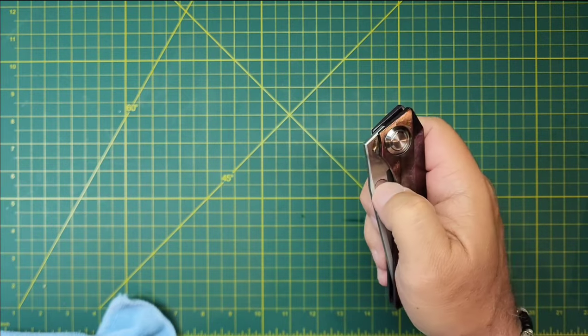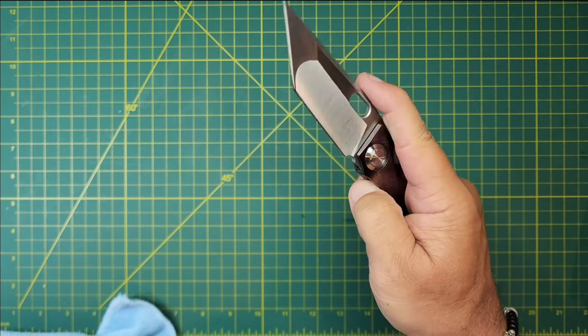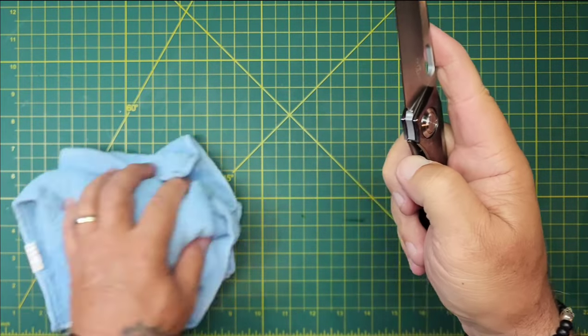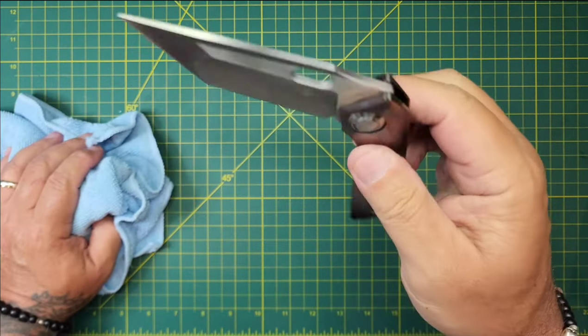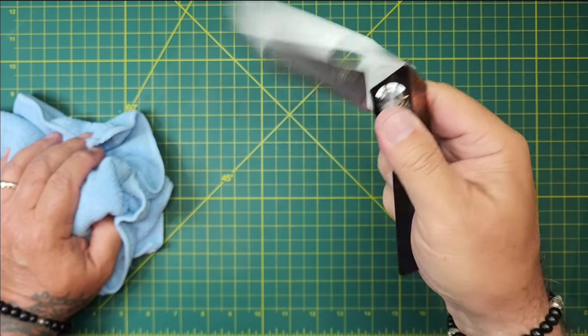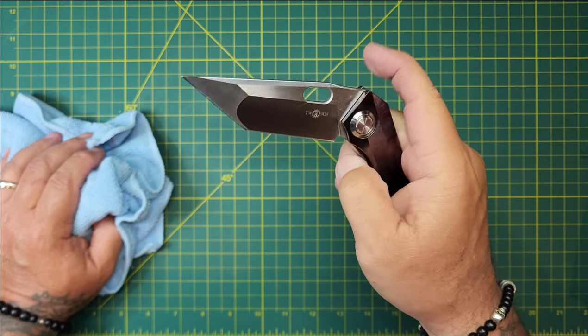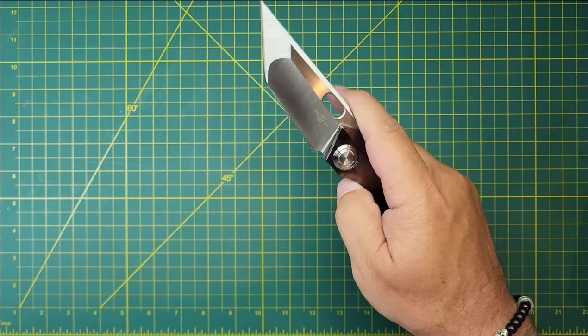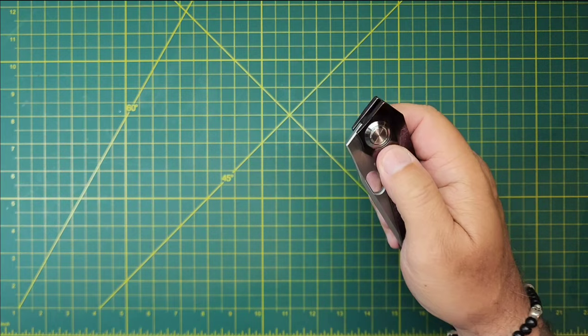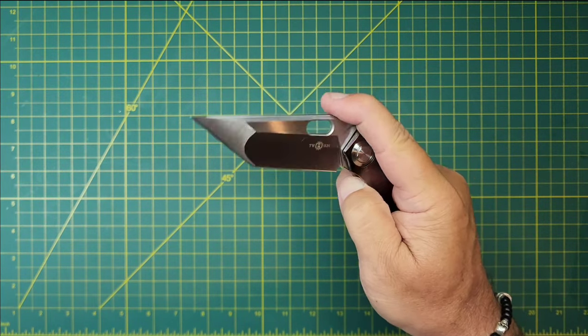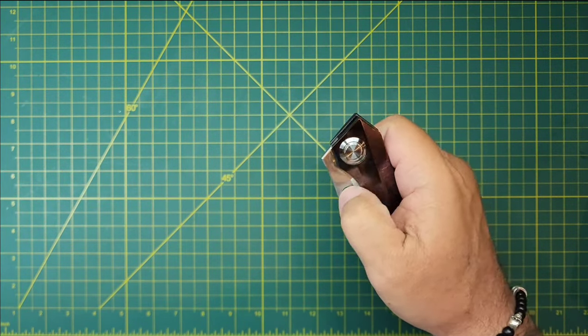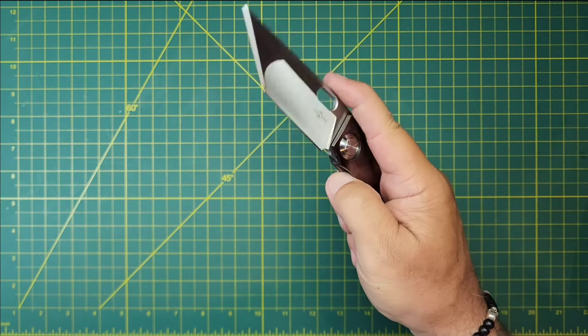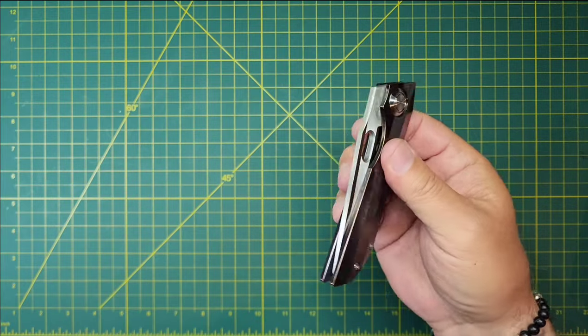Drop's pretty good. Thumb flick's good. Dropping better just from working it. Try that spidey flick. Yeah, that's natural. The blade seems really heavy on this. The action itself seems pretty good but the blade seems really heavy.